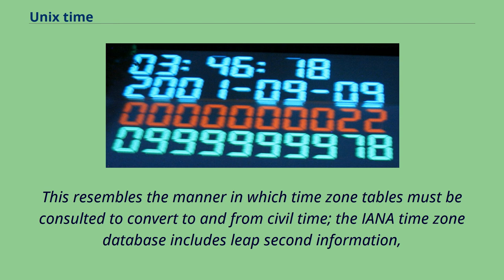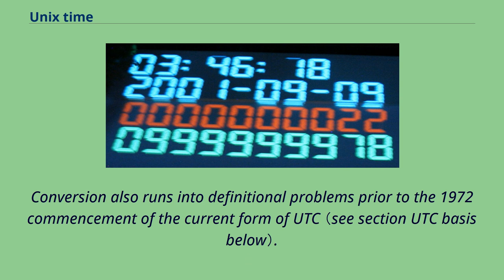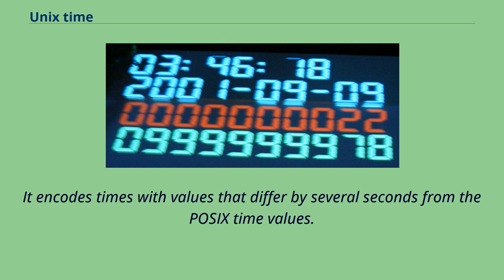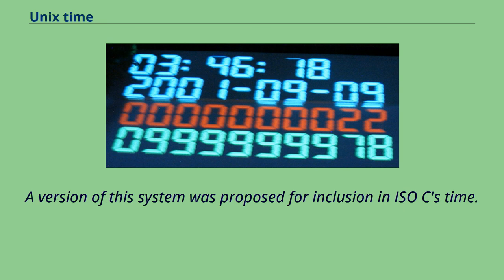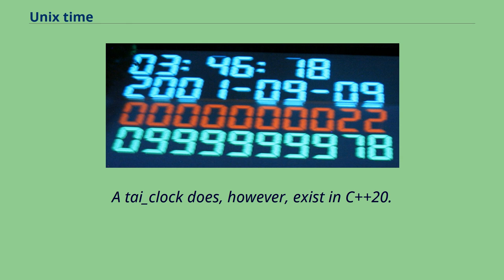This resembles the manner in which time zone tables must be consulted to convert to and from civil time. The IANA time zone database includes leap second information, and sample code from the same source uses that information to convert between TAI-based timestamps and local time. Conversion also runs into definitional problems prior to the 1972 commencement of the current UTC. This TAI-based system, despite its superficial resemblance, is not Unix time — it encodes times with values that differ by several seconds from the POSIX time values. A version was proposed for inclusion in ISO C's time.h, but only the UTC part was accepted in 2011. A TAI_clock does, however, exist in C++20.